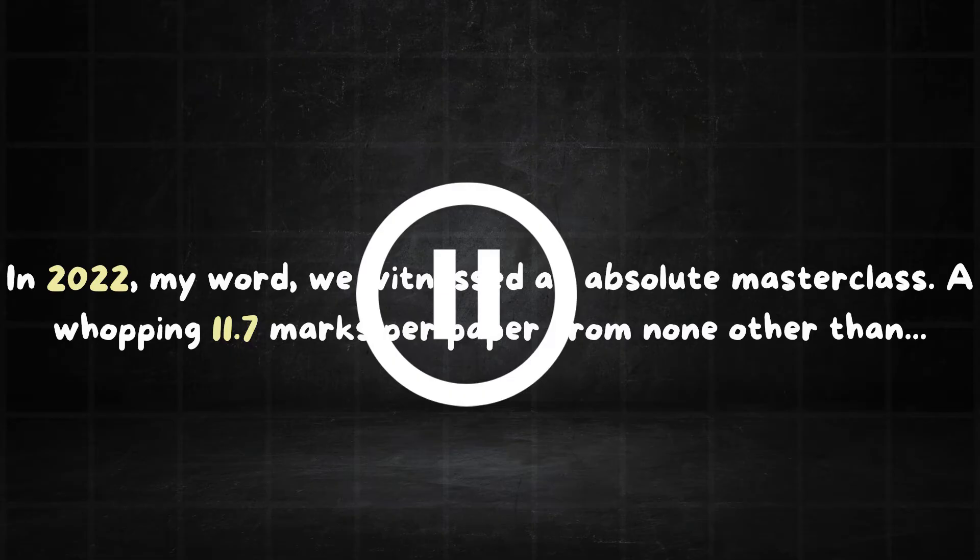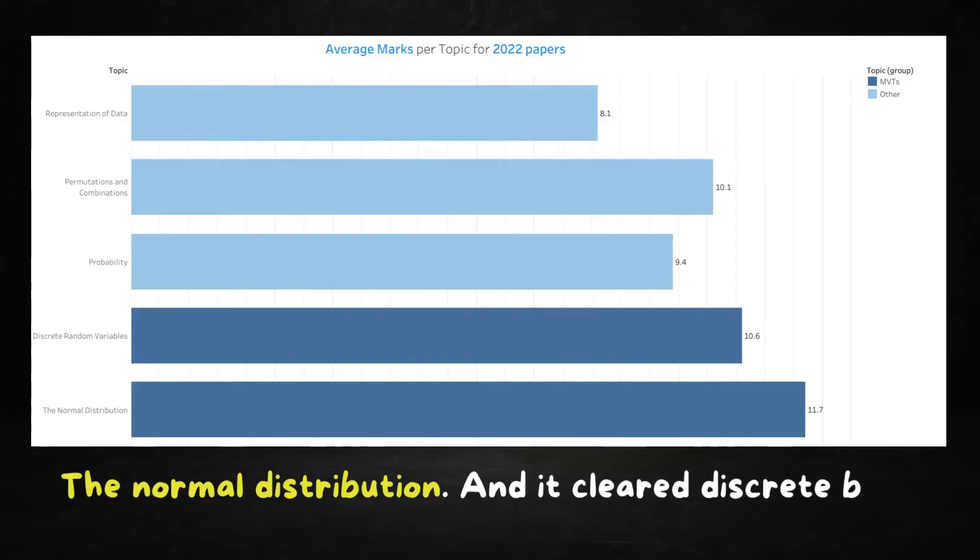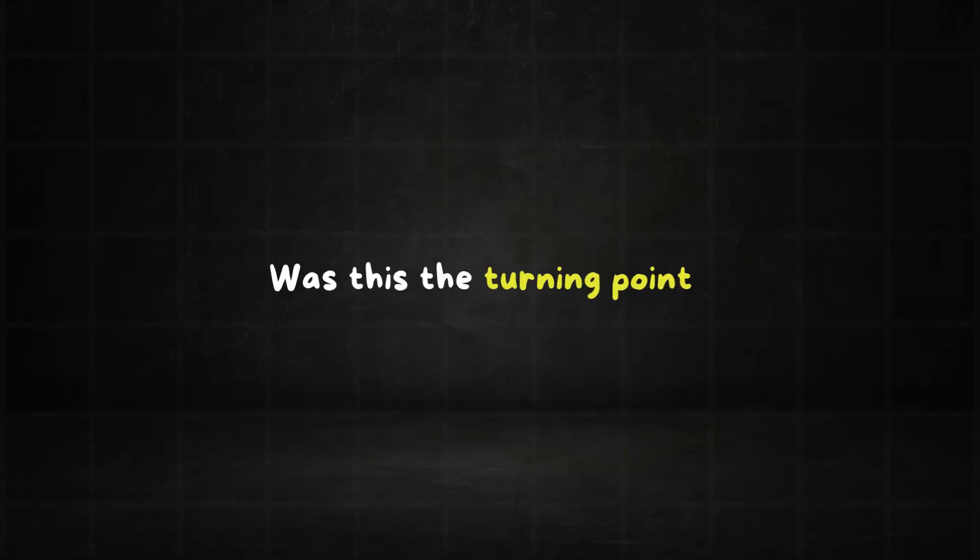Comment down below. What topic do you think I'm about to say next? The normal distribution ended clear discrete by 1.1 marks. Was this the turning point? Because it doesn't stop there.